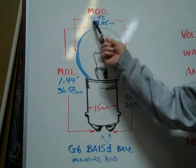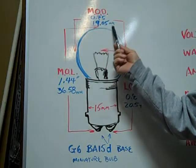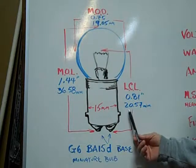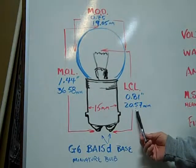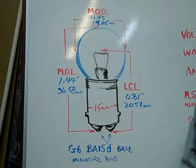The maximum outer diameter is 0.75 inches or 19.05 millimeters. The light center length is 0.81 inches or 20.57 millimeters. The base diameter is 15 millimeters.